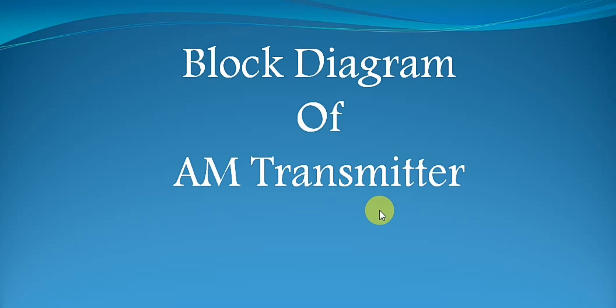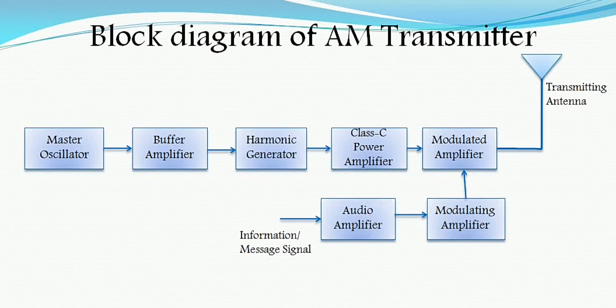Now let us see what are the blocks involved in an AM transmitter. This is the block diagram of the AM transmitter. Several blocks are involved in order to transmit our information signal or message signal through a wireless channel. The block diagram uses an antenna, which indicates that the signal is passing through a wireless channel.